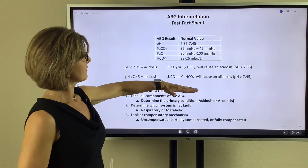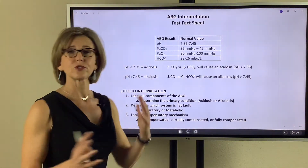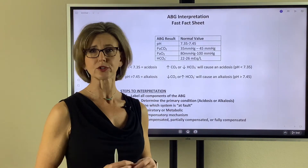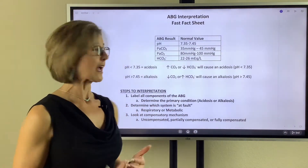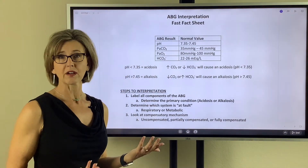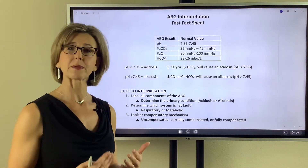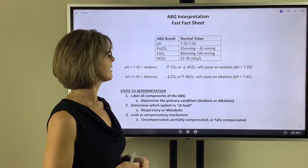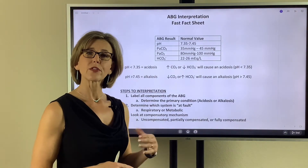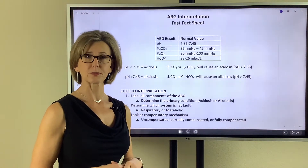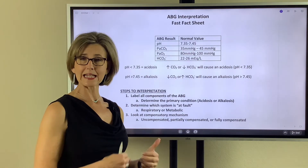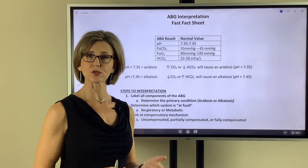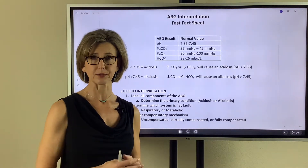The top part of this sheet contains values you are going to have to memorize, but you're going to use this concept throughout your entire career. The normal value for pH is 7.35 to 7.45. For PaCO2, 35 to 45 millimeters of mercury. PaO2 is 80 to 100 millimeters of mercury. And bicarbonate is 22 to 26 milliequivalents per liter.